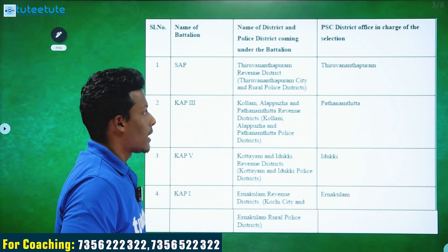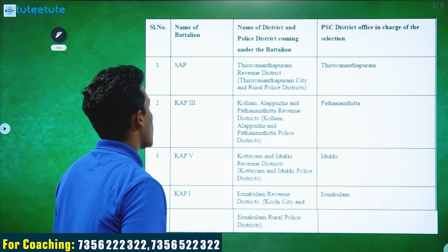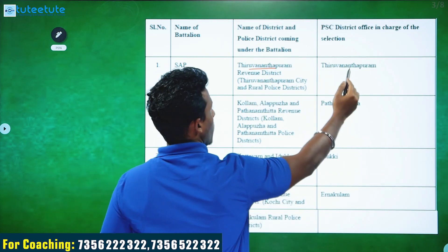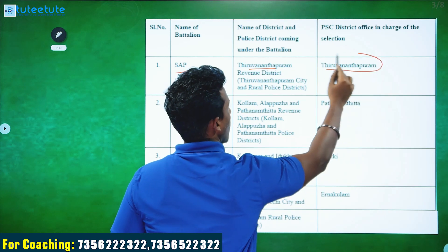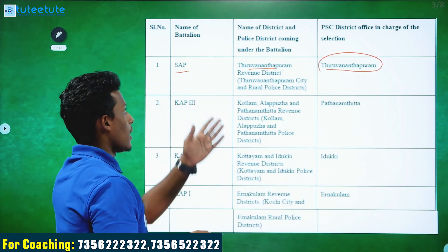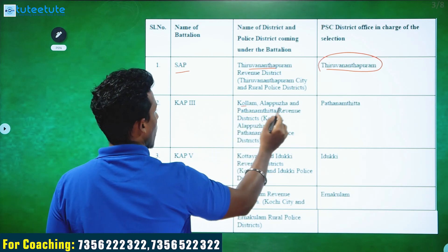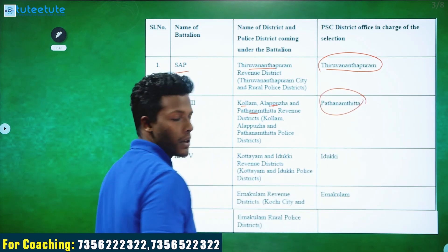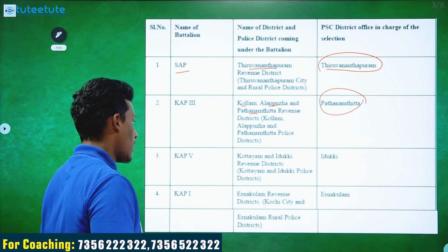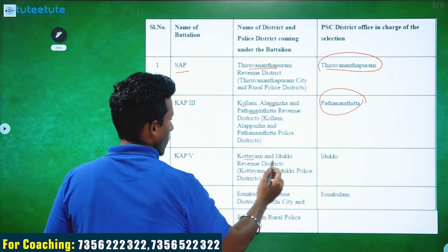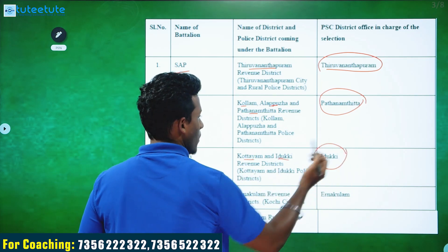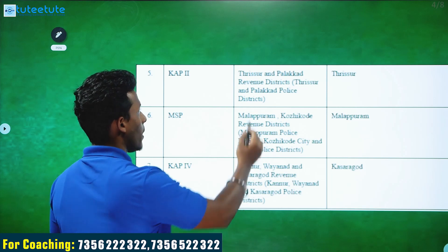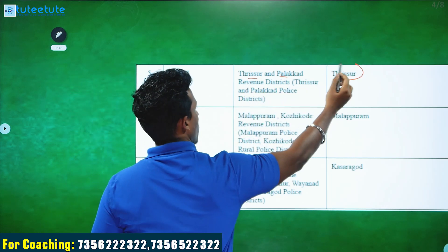The details are available in the battalion. You can see the details in the description. You can see the code of the SAP and the section of the PAC District Office, as well as the Department of Lacharam.